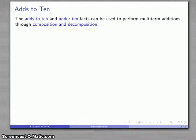The reason is that the adds to 10 and the under 10 facts, we can do multi-term additions through what's called composition and decomposition. We're going to break numbers apart and put them together in ways that they will either add to 10 or I'll have some leftover numbers that I can then add pretty easily.